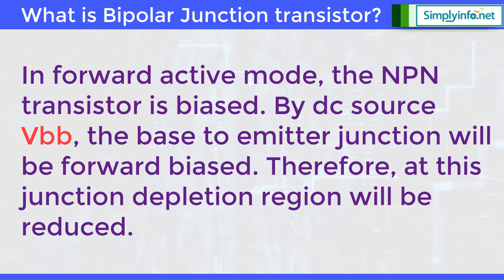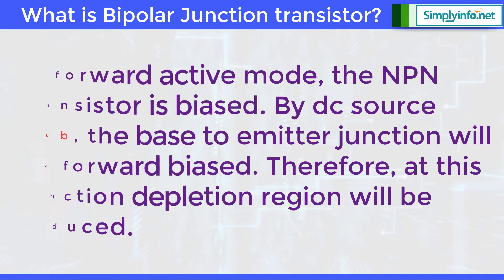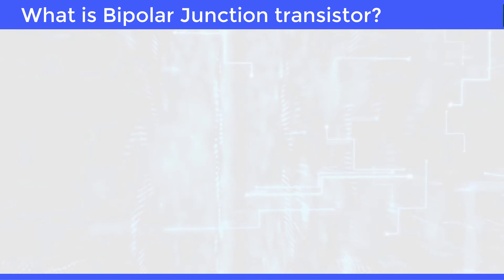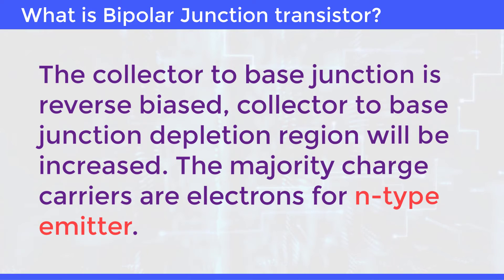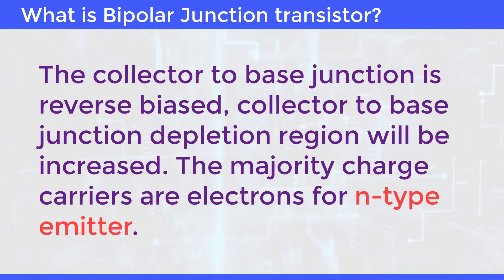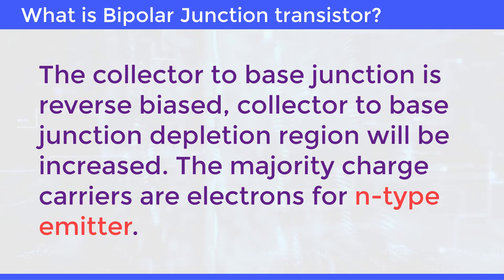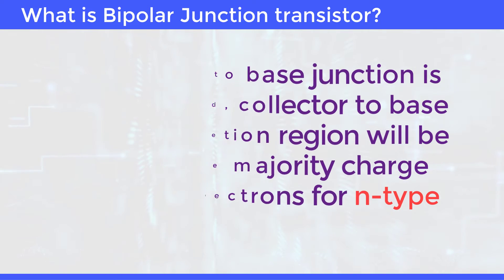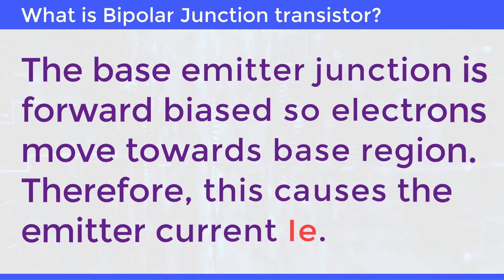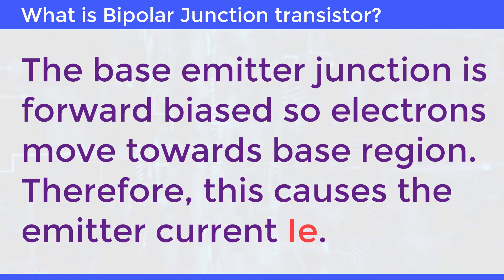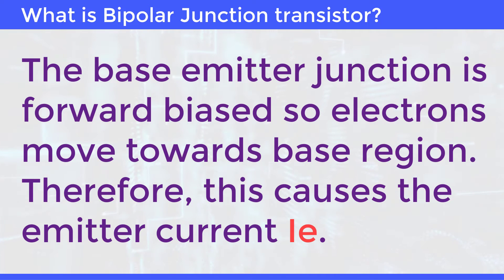Therefore, at this junction the depletion region will be reduced. The collector-to-base junction is reverse biased, so the collector-to-base junction depletion region will be increased. The majority charge carriers are electrons of the N-type emitter. Since the base-emitter junction is forward biased, electrons move towards the base region, causing the emitter current IE.